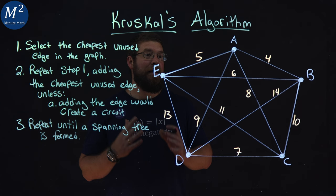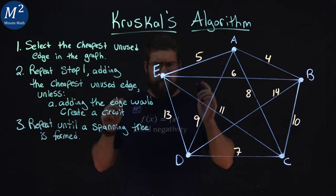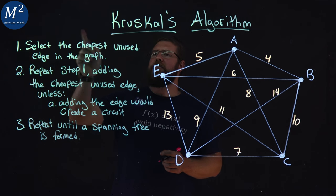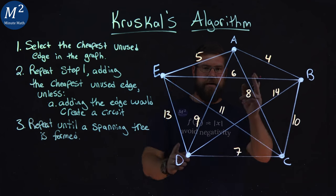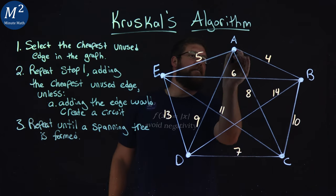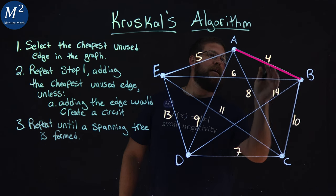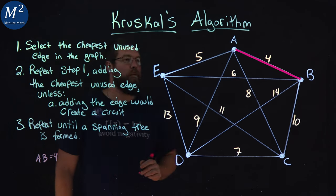So let's apply Kruskal's algorithm to our graph to find our minimum cost spanning tree. Step one, select the cheapest unused edge in the graph. So our cheapest unused edge I see is four, A to B. I select A to B right there and we got a four. I'll keep a little note here. A, B was selected and that's a four.